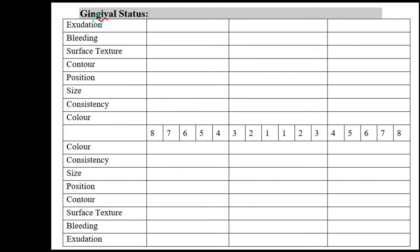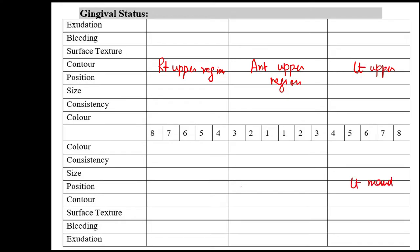So what clinical features do you need to notice, and how are you supposed to tabulate them? This is a gingival status chart, which consists of six sextants: the right upper, anterior upper (maxillary), and left upper regions, as well as the left mandibular, anterior mandibular, and right mandibular regions. Within this format, you have to record eight subcategories: color, consistency, size, position, contour, surface texture, bleeding on probing, and exudation or pus discharge.